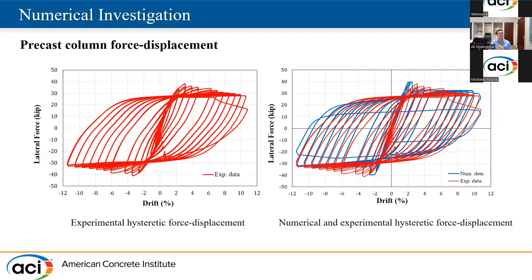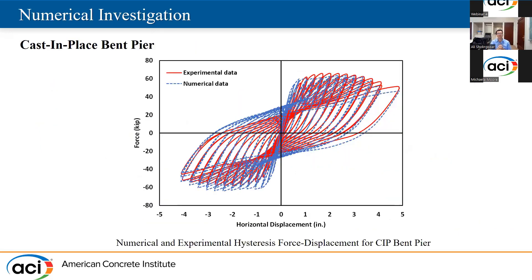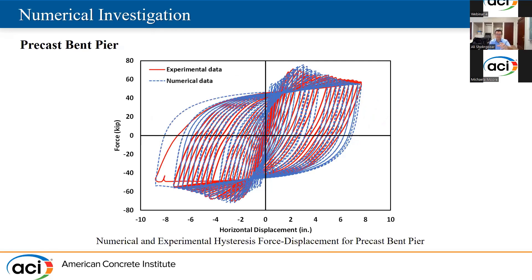Here you can see the results of the numerical analysis for the precast with pipe connection. It is really cool that we were able to capture the last cycle with the peak of the last cycle, where buckling happened. After that, I modeled the precast bent as well as the cast-in-place bent. We were able to capture the peak for each cycle. The low cycle fatigue was critical — if I didn't define it, I wouldn't be able to capture the peaks because the cycles would just grow and not come down. Even in the precast bent, you can see the peaks getting smaller after each cycle, which was impossible to capture without low cycle fatigue.